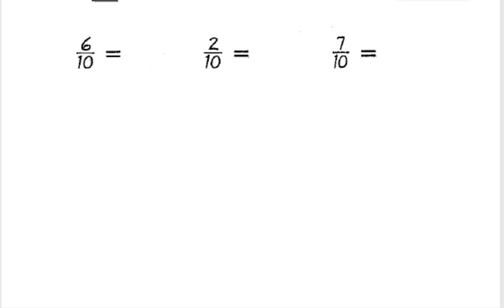So here I have six tenths. Six tenths would be the same as zero decimal place and then the numerator six. Two tenths would be zero decimal two. And seven tenths would be zero decimal seven.